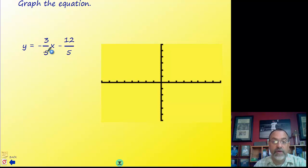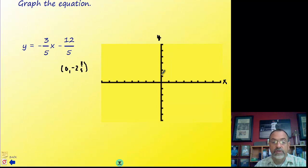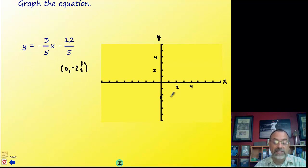Let's do another example: y equals negative three-fifths x minus twelve-fifths. Don't get distracted by the fractions. The y-intercept is (0, negative twelve-fifths) — you can convert that to a mixed number: negative two and two-fifths — so it's somewhere between negative two and negative three on the y-axis.